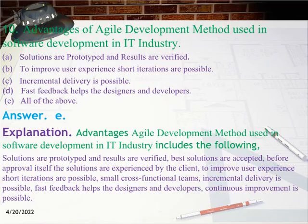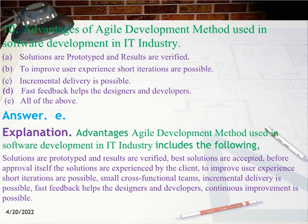Question 10: Advantages of agile development method used in software development in the IT industry — A. Solutions are prototyped and results are verified, B. To improve user experience, short iterations are possible, C. Incremental delivery is possible, D. Fast feedback helps the designers and developers, E. All of the above. Answer: E. All of the above. Explanation: Advantages include: solutions are prototyped and results are verified; best solutions are accepted; before approval itself, the solutions are experienced by the client; short iterations improve user experience; small cross-functional teams; incremental delivery is possible; fast feedback helps designers and developers; continuous improvement is possible.